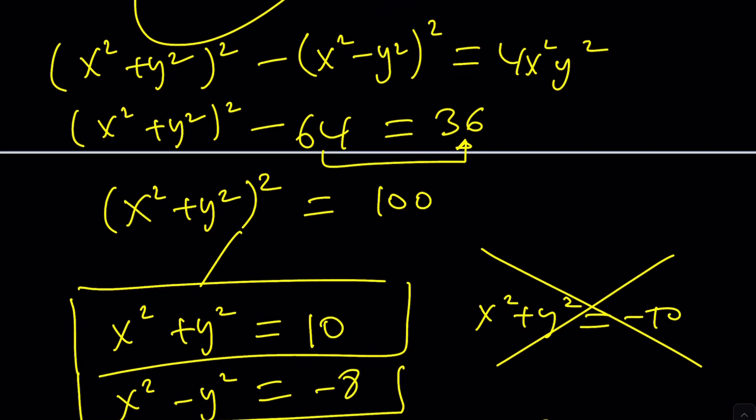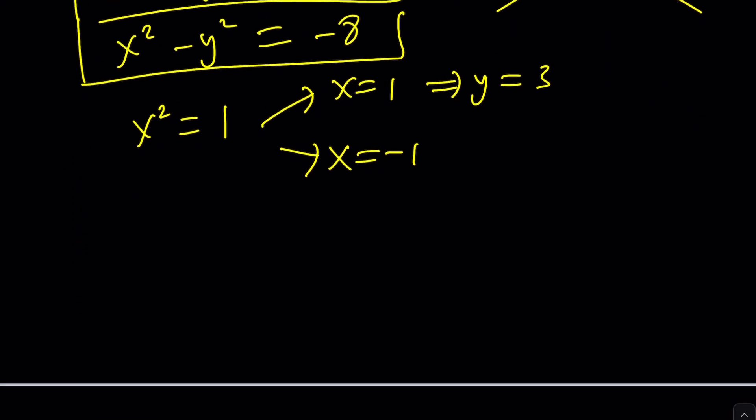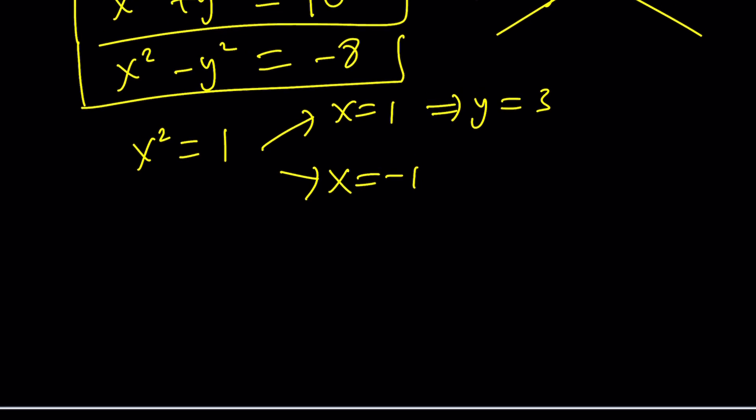So we might as well use that original one because we squared things and you know, it's kind of gotten crazy. So if x is one, y is three because xy is positive three. Remember that. And if x is negative one, y is equal to negative three.